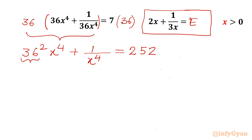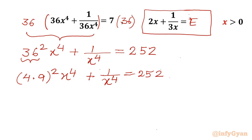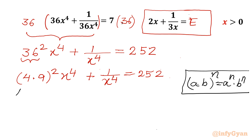Now I can split 36 as 4 times 9, as factors, whole power 2 — giving x⁴ plus 1 over x⁴ equals 252. I will use the exponent property that (a times b) to the power n equals a to the power n times b to the power n. So I write 4² times 9² times x⁴ plus 1 over x⁴ equals 252.